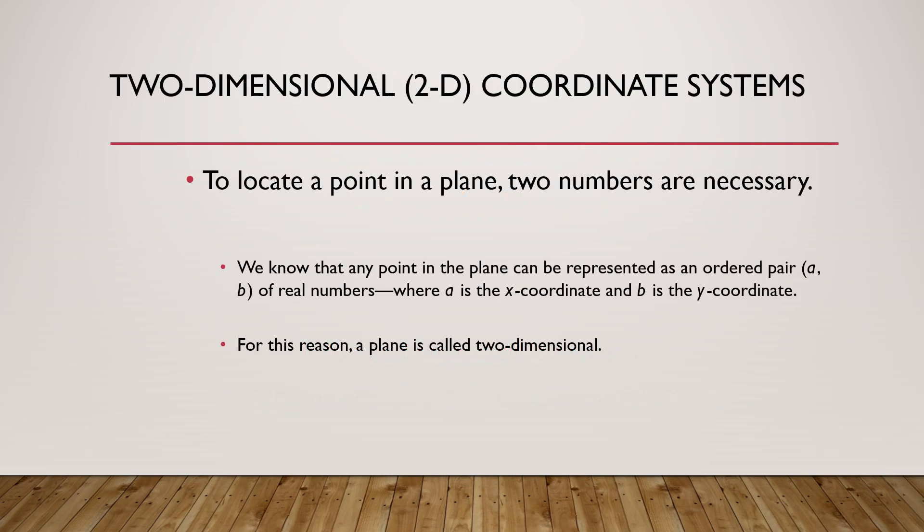The two dimensional coordinate system is relatively easy. To locate a point P in a plane, only two numbers are necessary, so any two real numbers can locate x and y coordinates in any plane. If we need only two real numbers in an ordered pair, that is why it is called a two dimensional plane.